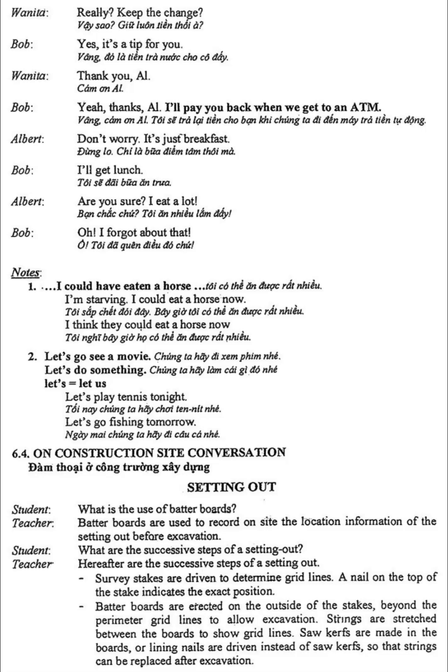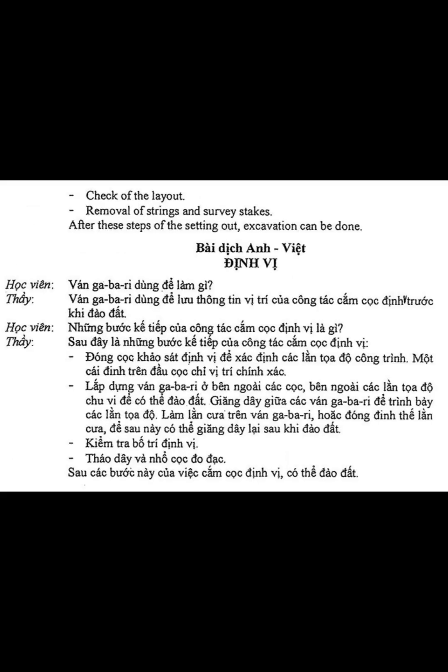Strings are stretched between the boards to show grid lines. Saw kerfs are made in the boards, or lining nails are driven instead of saw kerfs, so that strings can be replaced after excavation. Check of the layout. Removal of strings and survey stakes. After these steps of the setting out, excavation can be done.